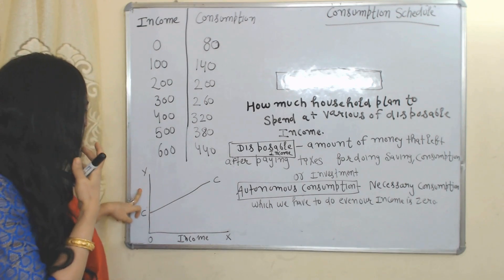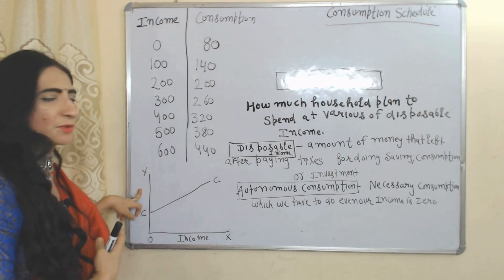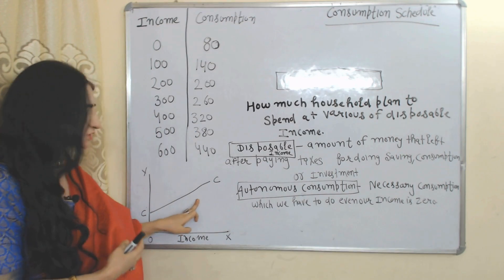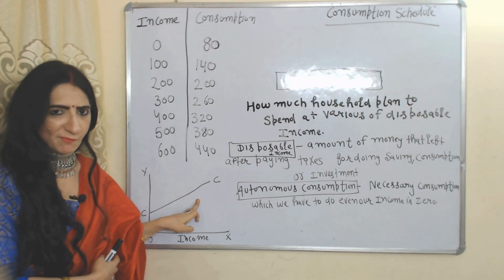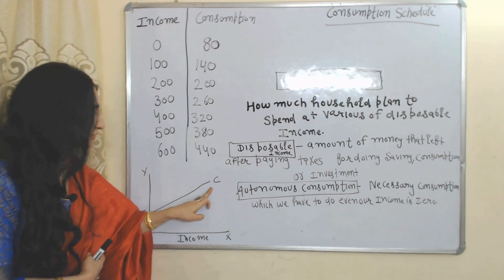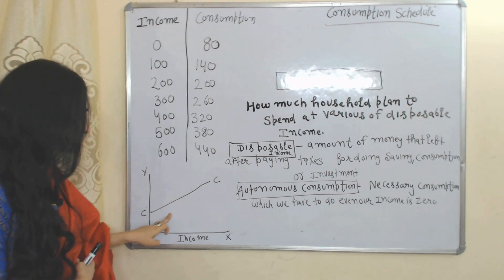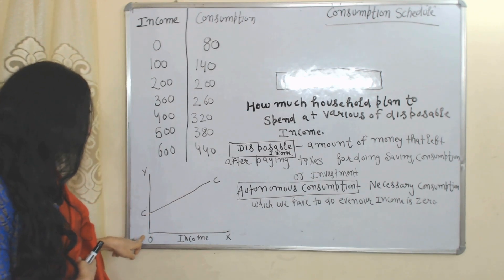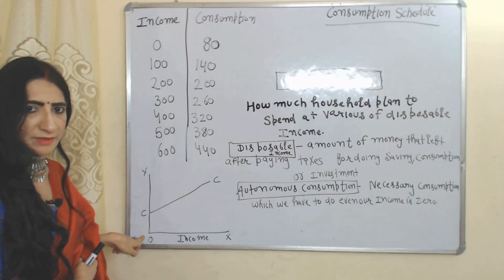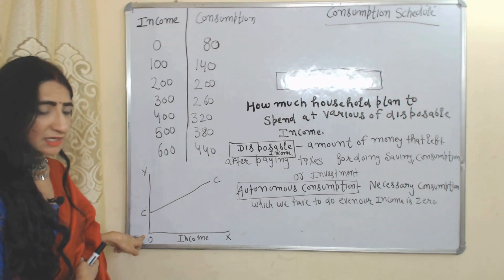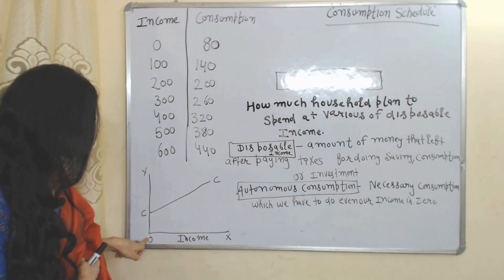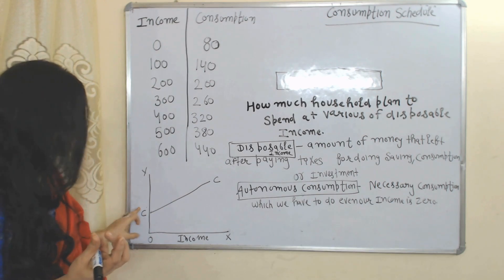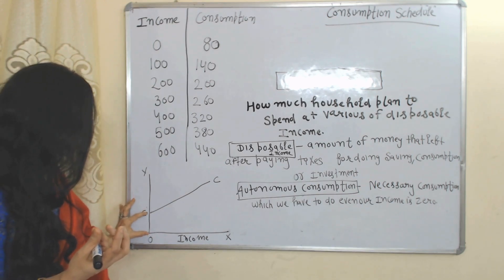On the x-axis we have income and on the y-axis we have consumption. This CC curve shows our consumption function. You can see our consumption curve starts from C, not from zero, because even at zero income we have to do some autonomous consumption. This OC distance is called autonomous consumption.